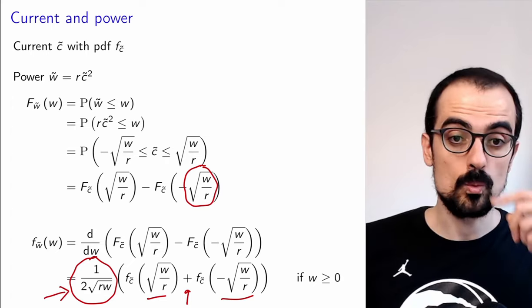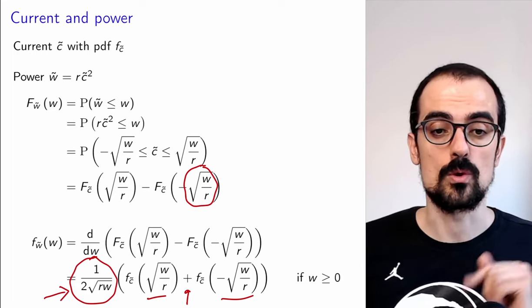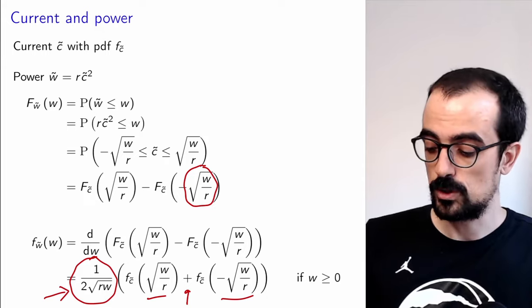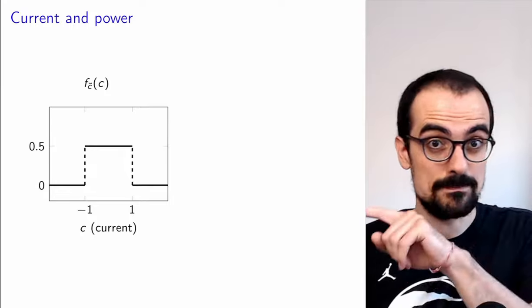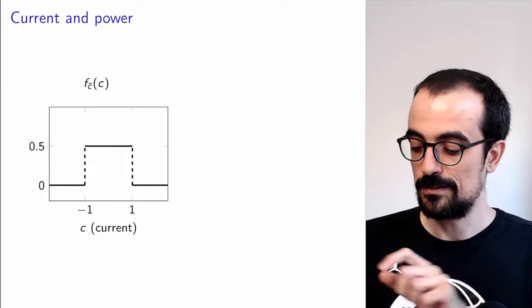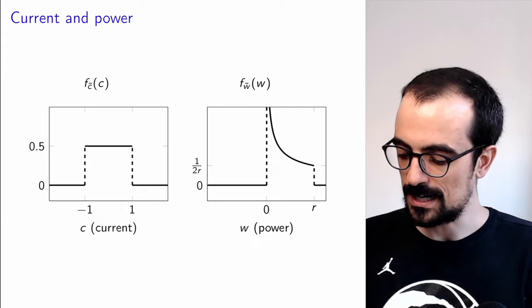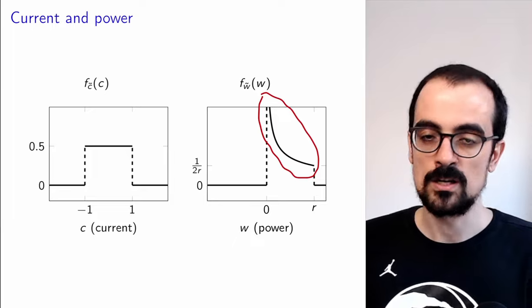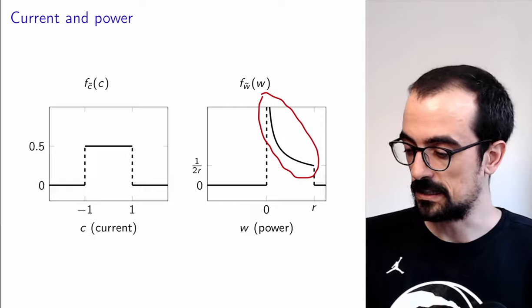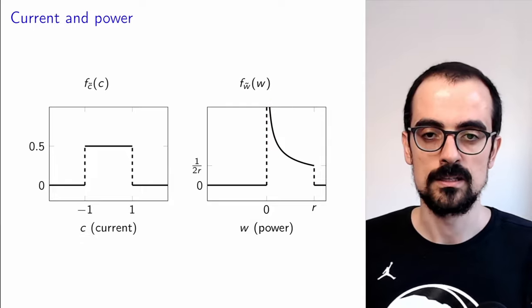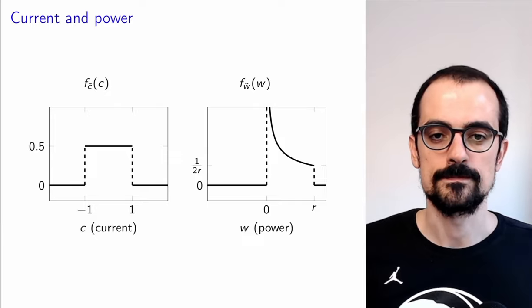So we get this somewhat complicated expression, which is the PDF at √(W/R) plus the PDF at -√(W/R), multiplied by a quantity proportional to 1/√W. If we look at an example where the current is uniform, the power is not going to be uniform — the power is non-zero between 0 and R and has this shape because of the 1/√W dependence that we have derived.